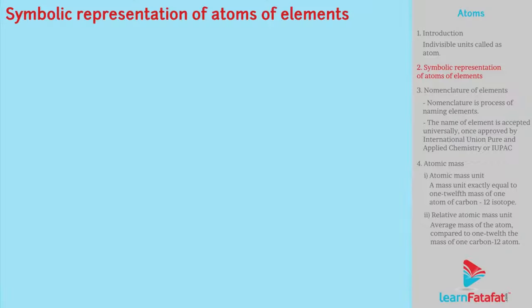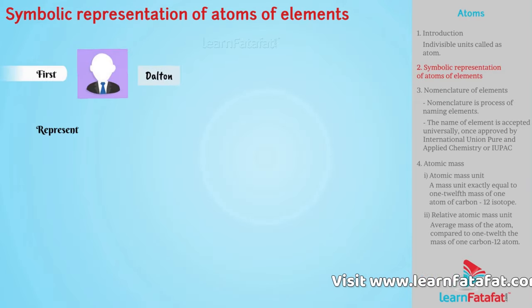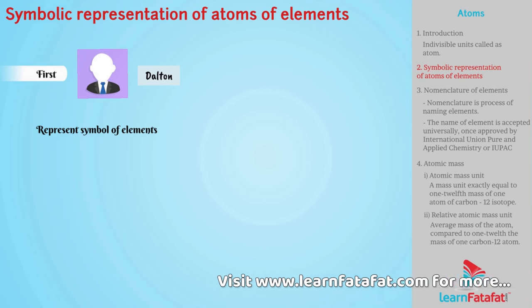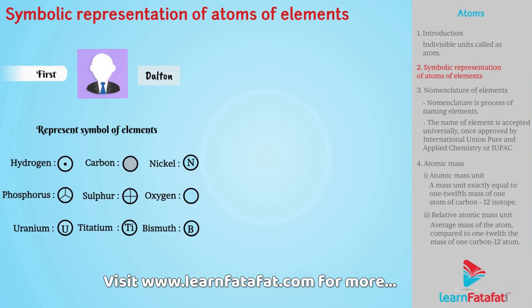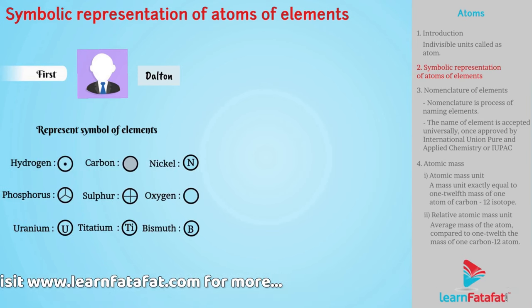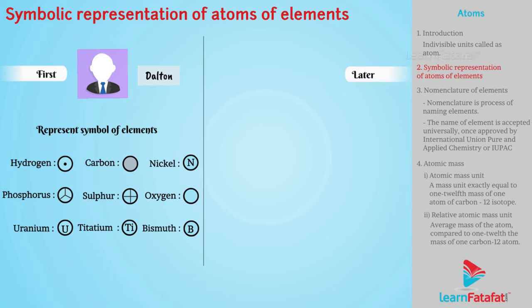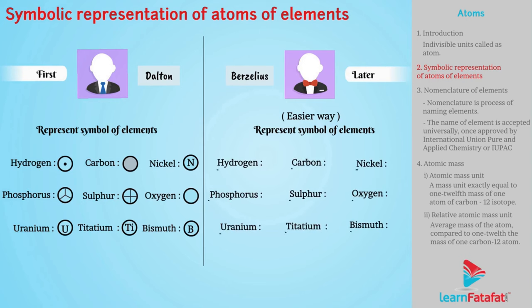Do you know Dalton was the first to represent symbols for elements? Elements were represented by circles containing letters or symbols. After that, Berzelius presented more easier way to represent symbol of elements, in which starting one or two letters from the name of element were used as a symbol.